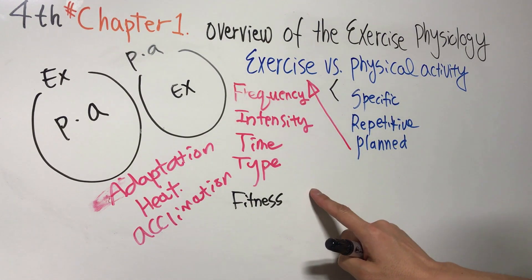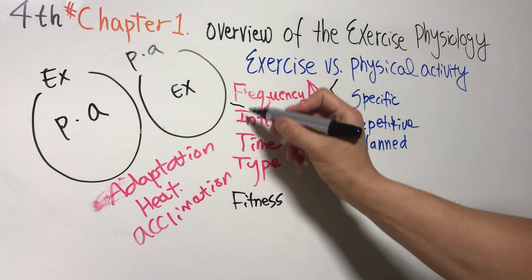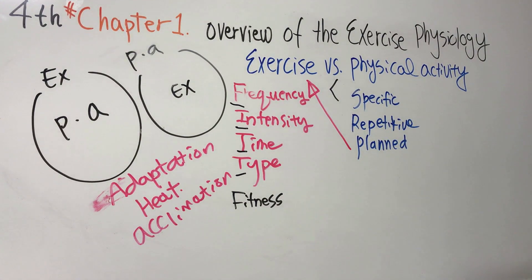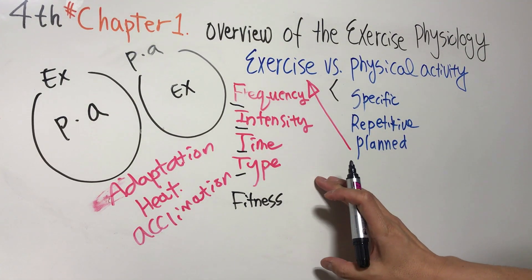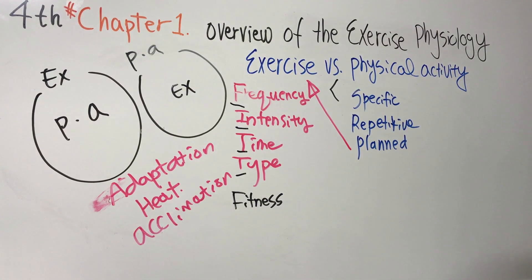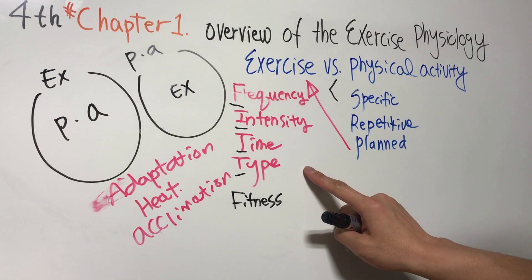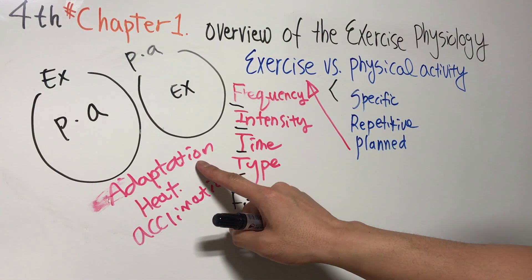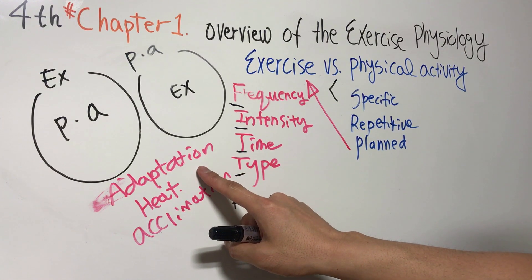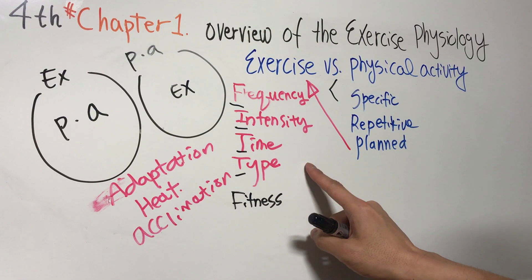So, how do you improve your adaptability? FITT needs to be adjusted. There is a principle of overload, a principle of training, right? If you do weight training and adaptation occurs, you need to lift heavier than before. If you run, you have to increase your speed, right?